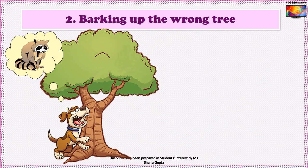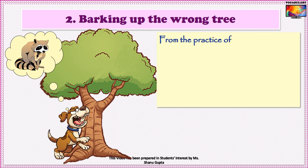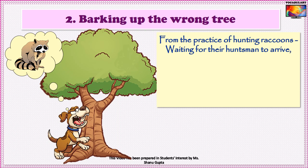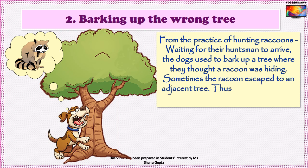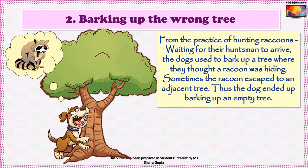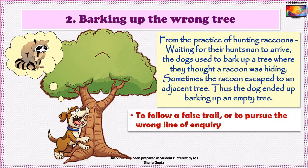Idiom number 2 is Barking up the wrong tree. It's a century-old idiom that seems to come from the practice of hunting raccoons. The raccoons used to climb up a tree when they were being chased by dogs. Waiting for their huntsmen to arrive, the dogs barked up the tree where they thought a raccoon was hiding. Sometimes the raccoon escaped to adjacent trees, and the dog ended up barking up an empty tree. So barking up the wrong tree means to follow a false trail or to pursue the wrong line of inquiry.